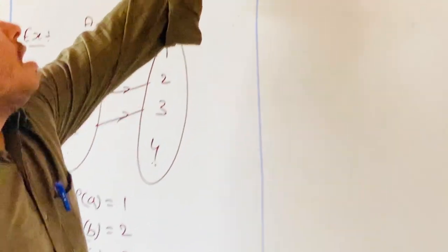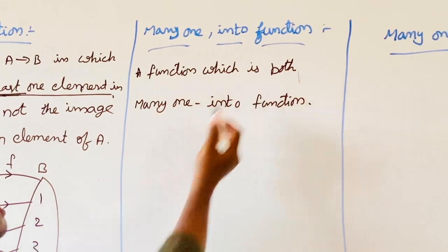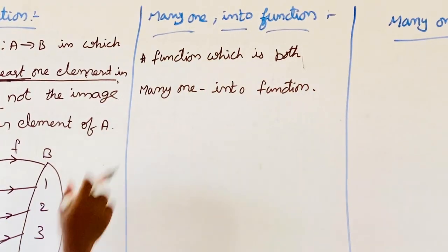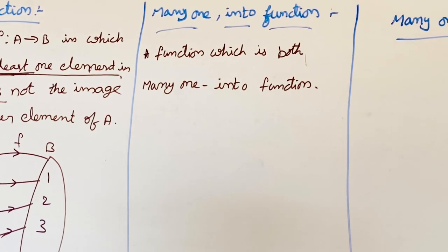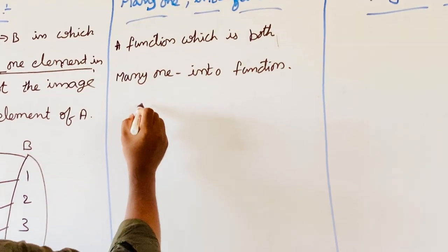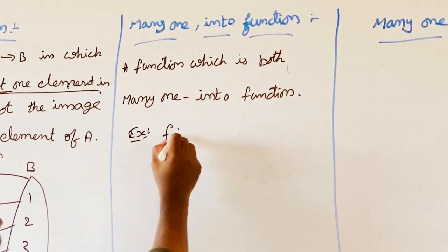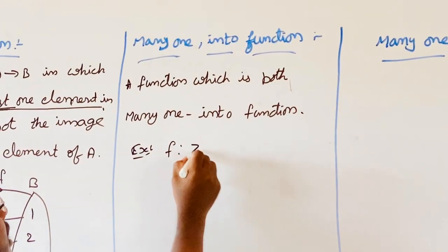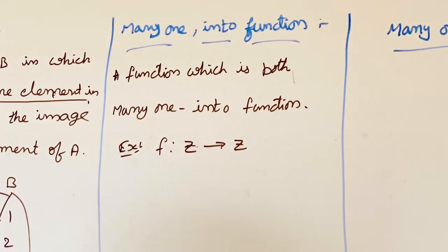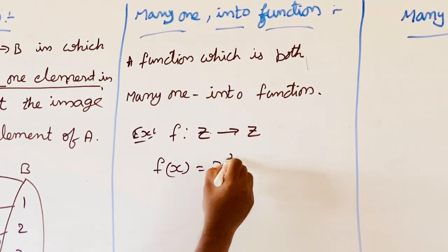Next is many-one into function — a function which is both many-one and into. For example, f mapping Z to Z, where both are integers, and f(x) = x².